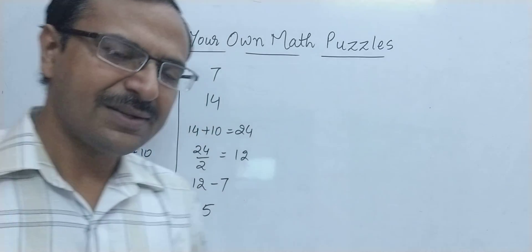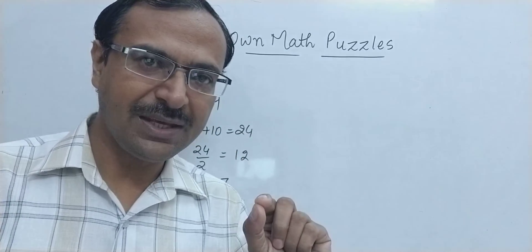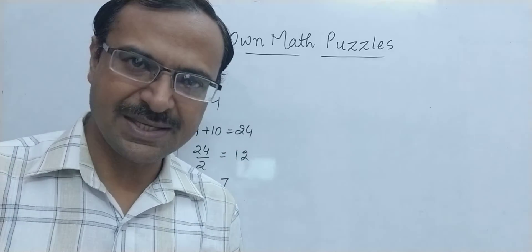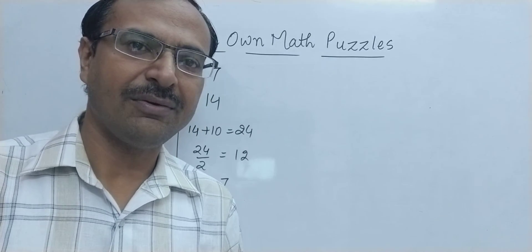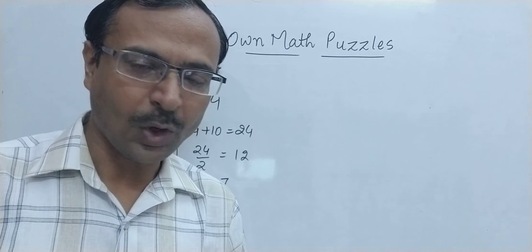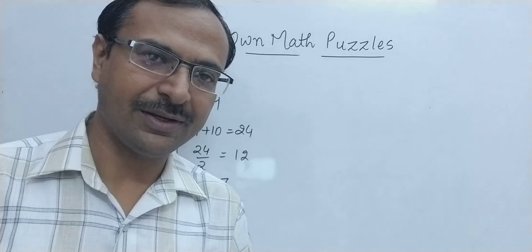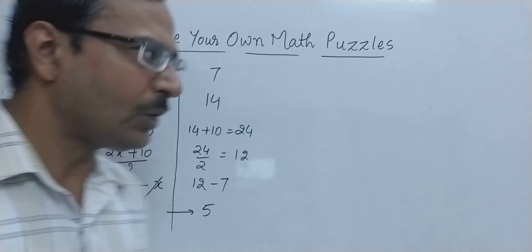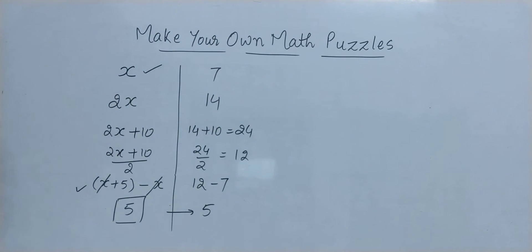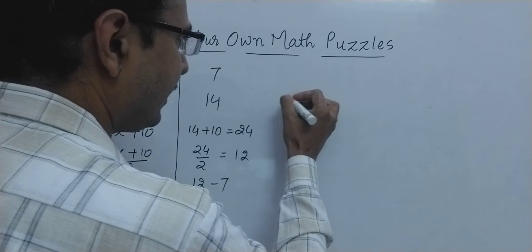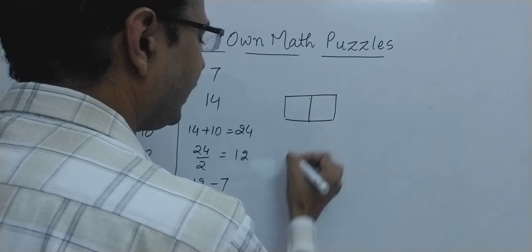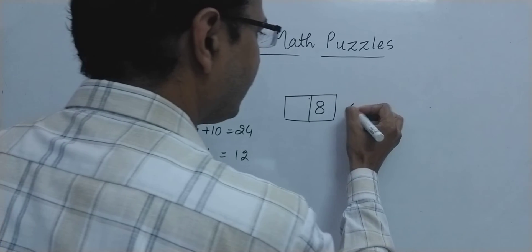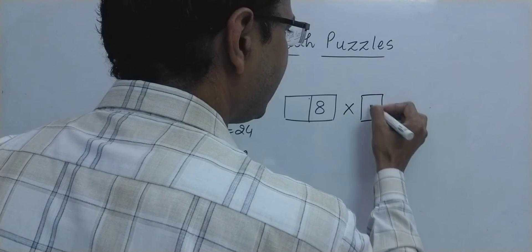So I will write an equation here in which some of the cells or columns will be missing and you need to insert numbers from 1 to 9. Obviously, we cannot use any number as duplicate. To understand this in a better manner, let's write a 2-digit number in which this digit is 8 and multiply it with a single digit number 3.